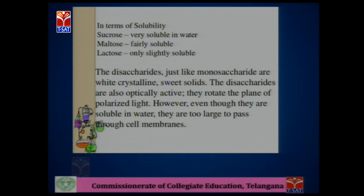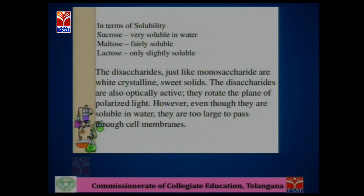Disaccharides are also optically active because, being formed from monosaccharides, they also have chiral centers — asymmetric carbons — and they rotate the plane of polarized light when passed through their solution. However, although they are soluble in water, disaccharides cannot pass through cell membranes in our body. In order to enter into cells, they have to be degraded — the disaccharides are broken down into monosaccharides, which are then absorbed into the cells.